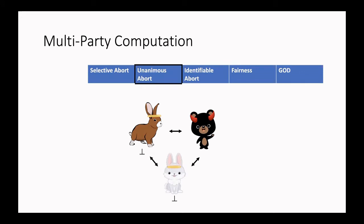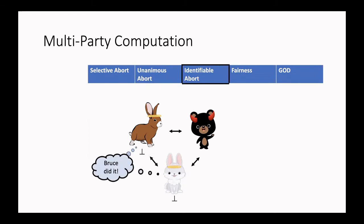Also in the unanimous abort notion, the adversary is entitled to learn the output of the computation even if he stops the protocol. The next notion is the one of identifiable abort, which is stronger than unanimous abort: if the adversary aborts, all honest parties will unanimously abort and, moreover, they can unanimously identify the party that caused the protocol to abort. Also in this notion, the adversary is entitled to learn the output of the computation even if he is aborting.